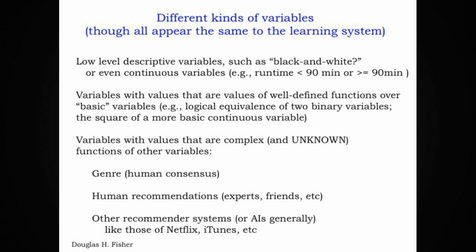Some variables are defined by functions over yet other variables. So for example, we might define a feature which is the logical equivalence of two other binary variables. Or if we have continuously valued variables, we might define higher order expressions of those variables. Perhaps the square of one of the variables or the product of two continuously valued variables.